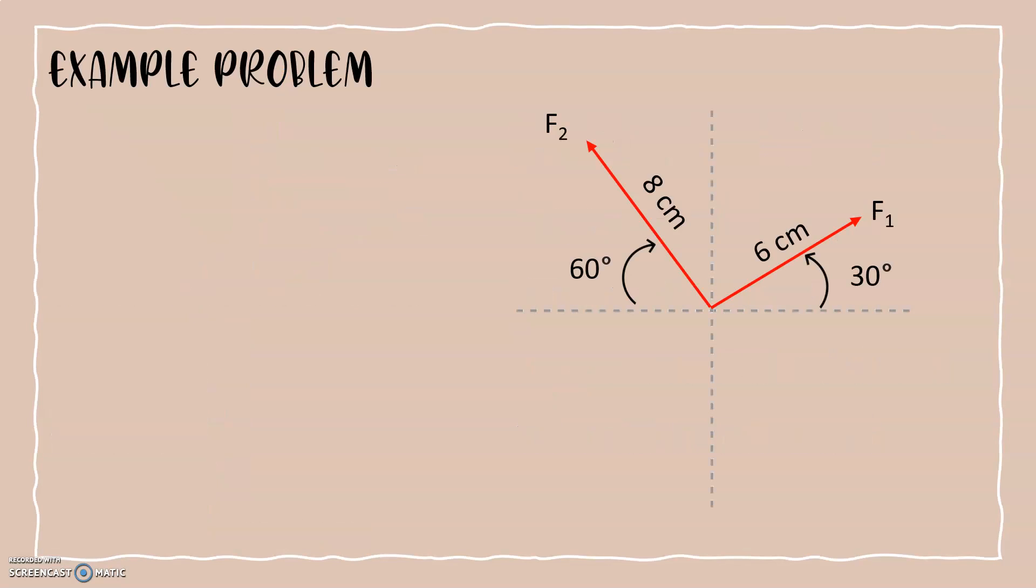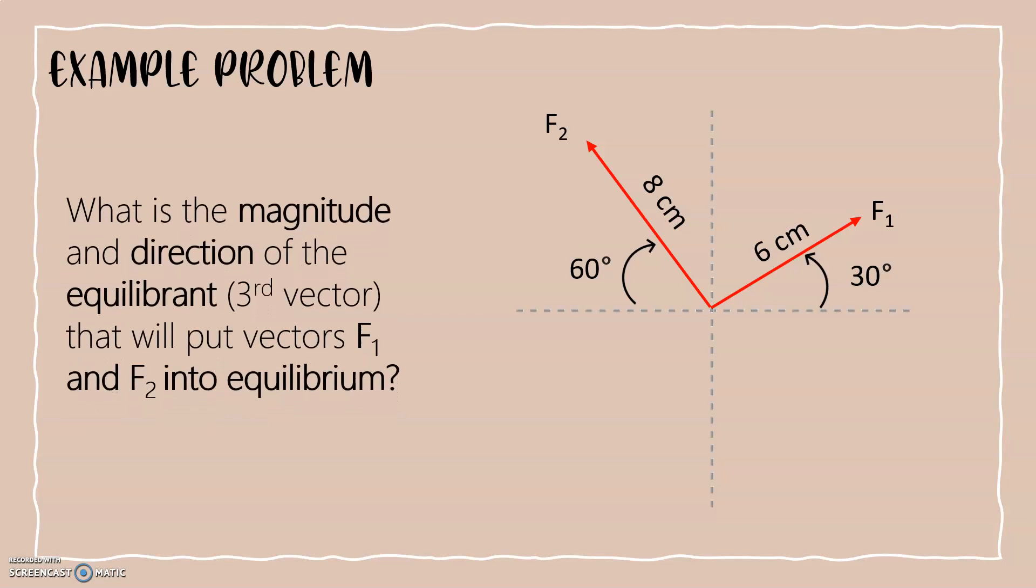So let's apply everything that we learned into this example problem. What is the magnitude and direction of the equilibrium that will place vectors f1 and f2 into equilibrium? Vector f1 is 6 centimeters at 30 degrees and vector f2 is 8 centimeters at 60 degrees from the west.